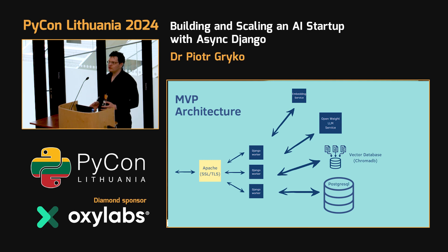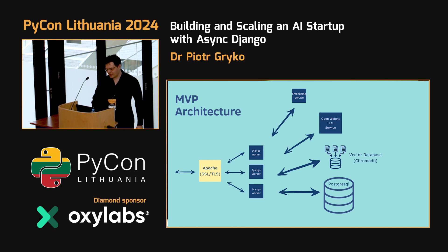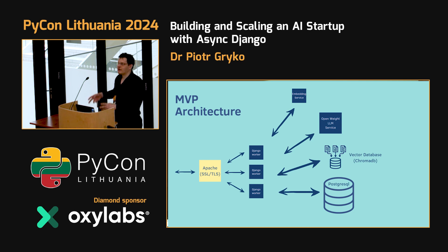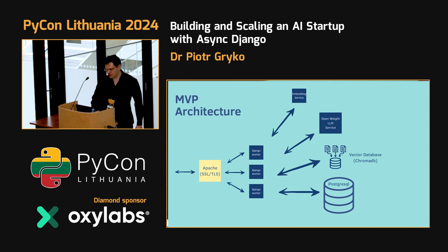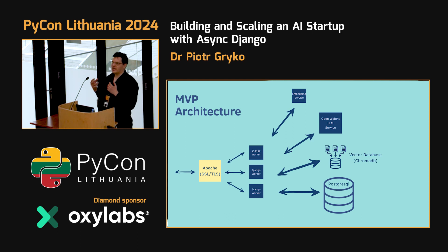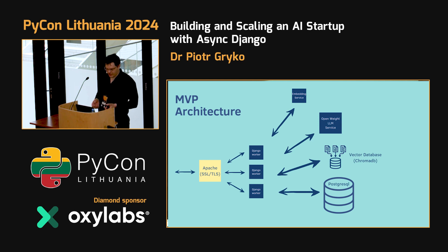When the user asks a question, that gets sent to the Django worker, which converts it to semantic meaning and queries the vector database, pulling out text chunks relevant to the conversation. That is then passed to the large language model and sent back. Everything goes through the Django workers, and the way we made it work is we used a decorator called Sync to Async, which lets you spin off blocking processes and run them in the background as a coroutine, assuming they are thread-insensitive.